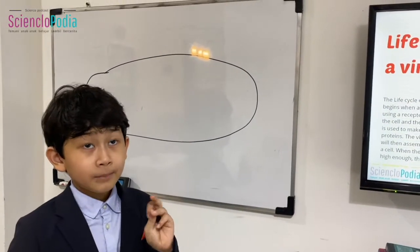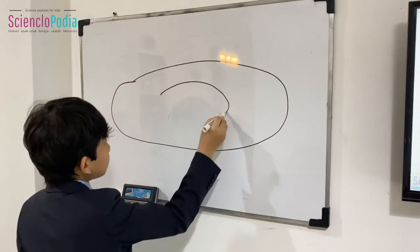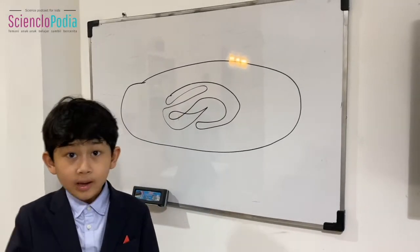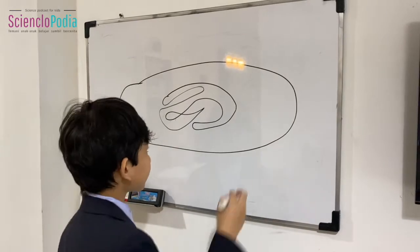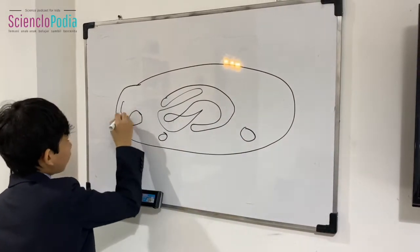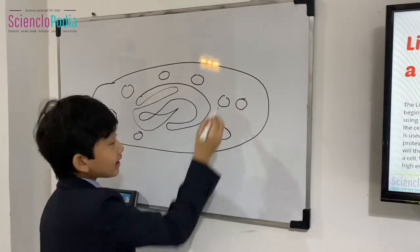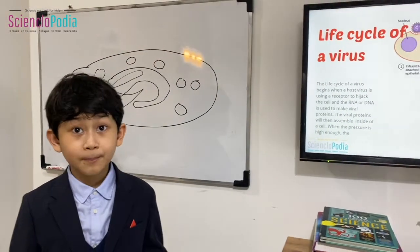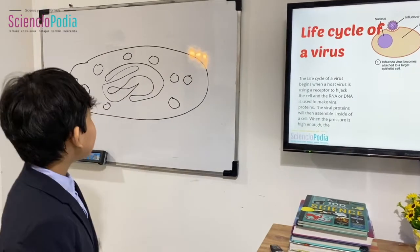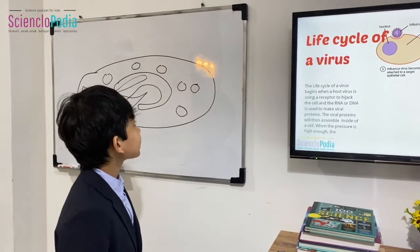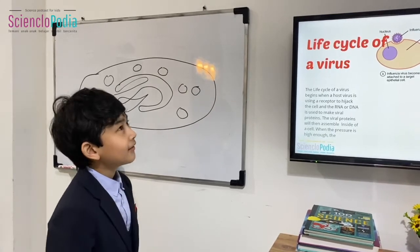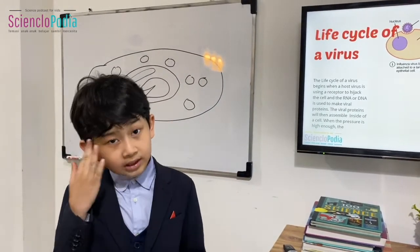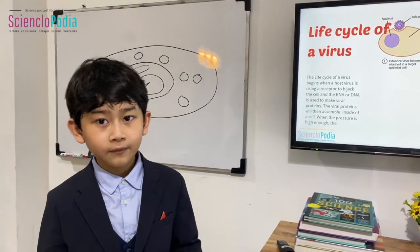Bacteria can also share immunity through something called a plasmid. Inside a bacterium there are two main ways of storing DNA or RNA: a giant chromosome, like the chromosomes in our cells, and a plasmid. Plasmids just float around and are used to share really useful genetic code. If a bacterium became immune to penicillin and met other bacteria, it could spread that immunity through the plasmid to other bacteria.